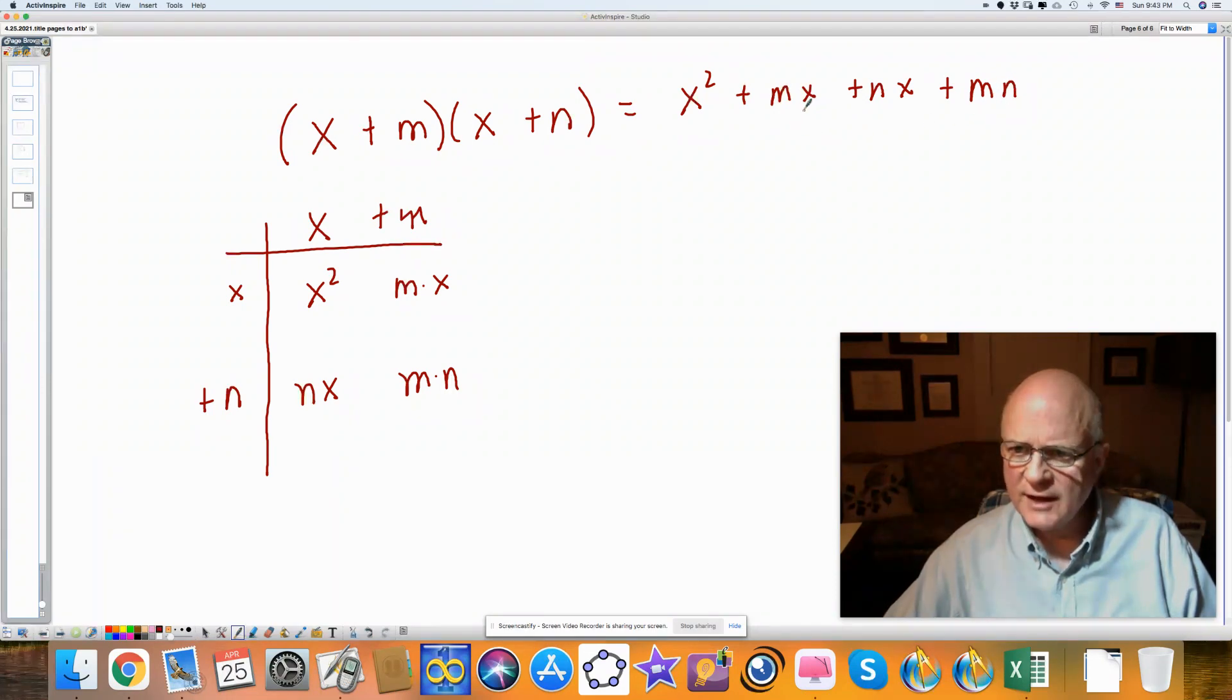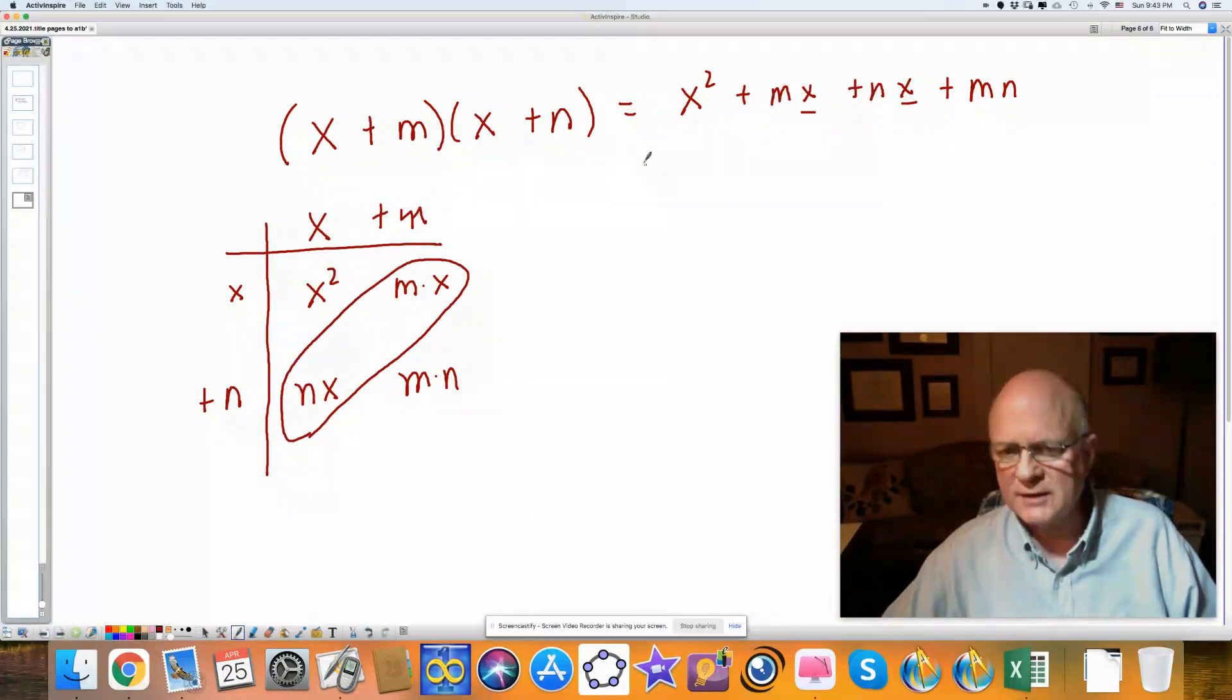These both have an x in common, these middle terms. These two terms are like terms. So I'm going to combine them, and I'll write this as x squared plus (m plus n) times x plus m times n.